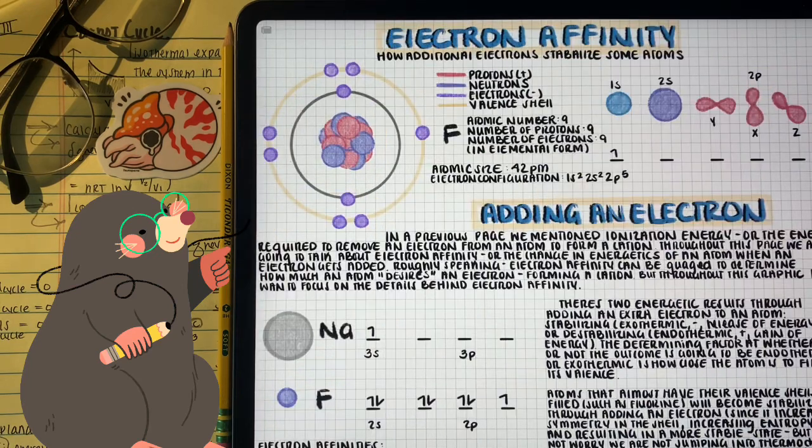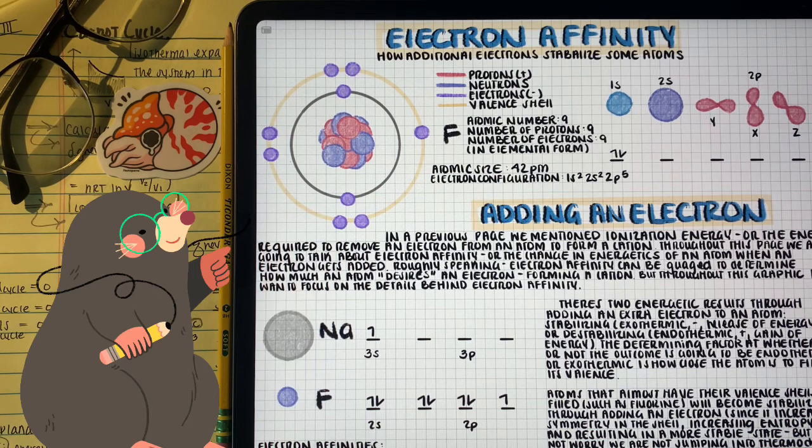We talked about electron affinity, kind of the opposite. What happens to the energetics of an atom when an electron is added to the valent shell? We learned that the more electrons in the valent shell, the more favorable it is to add an electron.